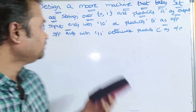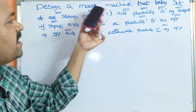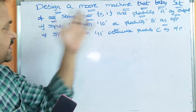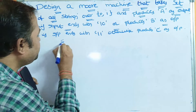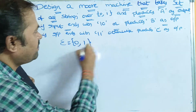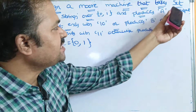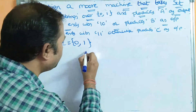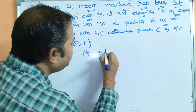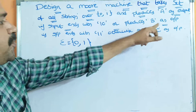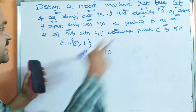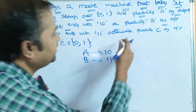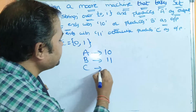Let us see this example. Design a Moore machine that takes the set of all strings over {0, 1}. So the input alphabet sigma is equal to {0, 1}. It produces A as the output if the input ends with 1, 0. It produces B as output if the input ends with 1, 1. Otherwise the output is C.